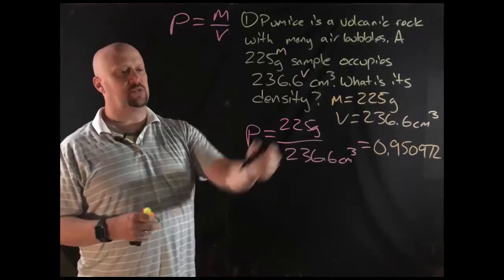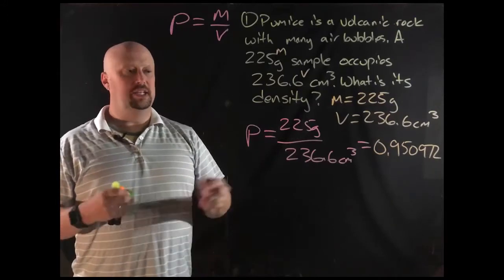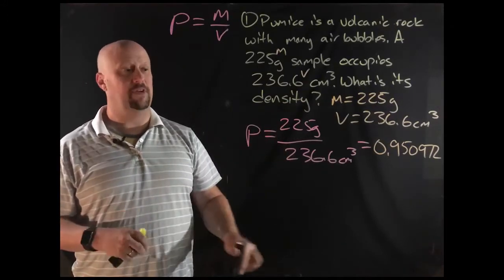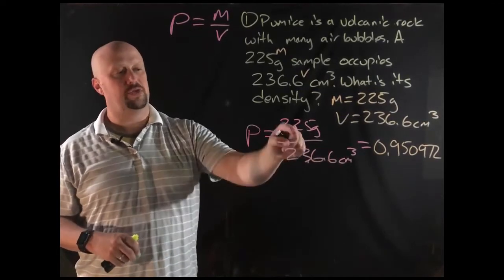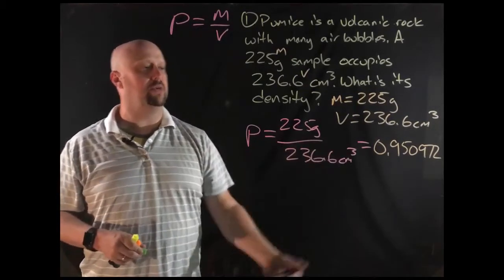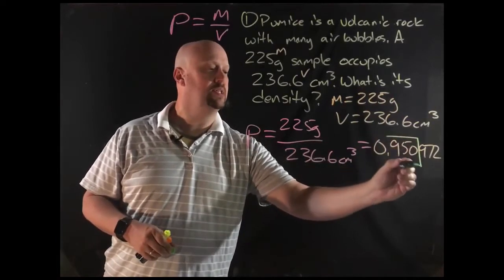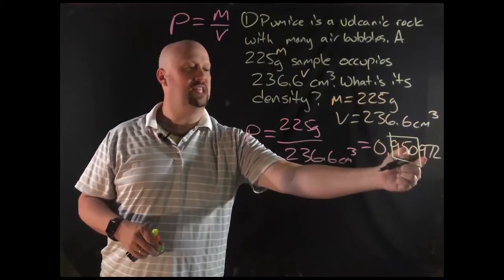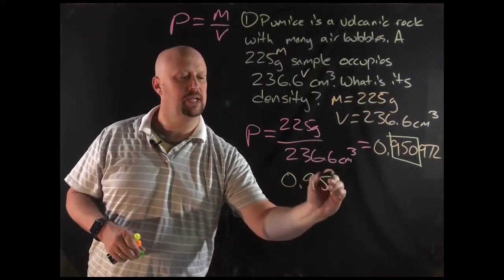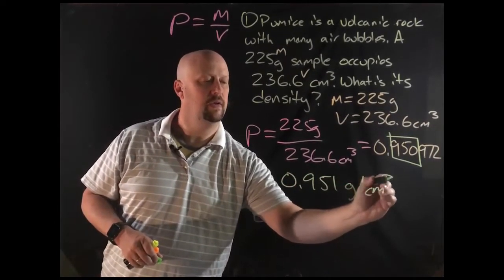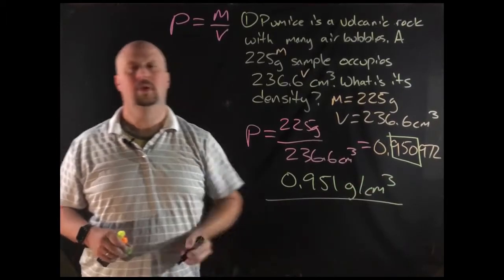So remember, since we're doing division, I need to round to the least number of significant figures. One, two, three sig figs. One, two, three, four. Three is lower than four, so I'm going to round to three sig figs, which means I'm going to stop there. Since that's a nine, that's going to make that go up. And so my correct answer then is this, okay?